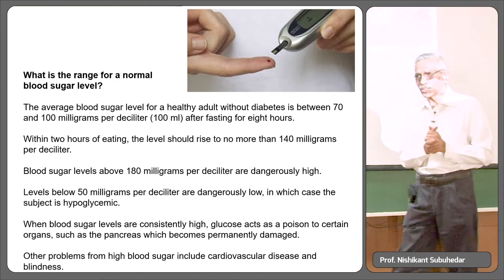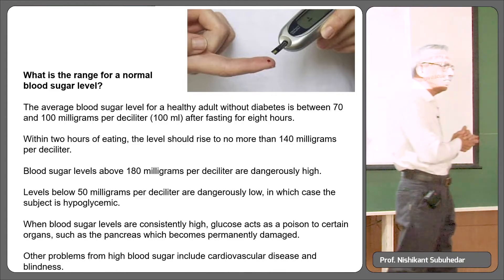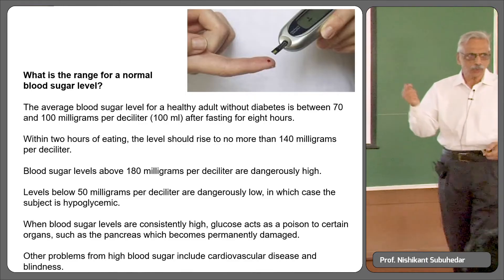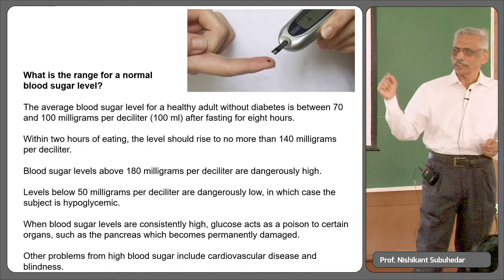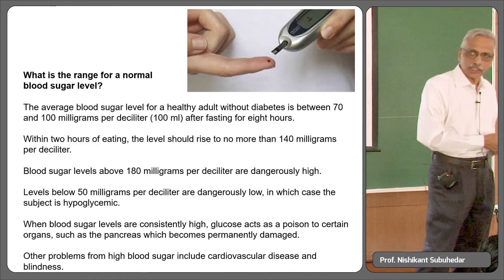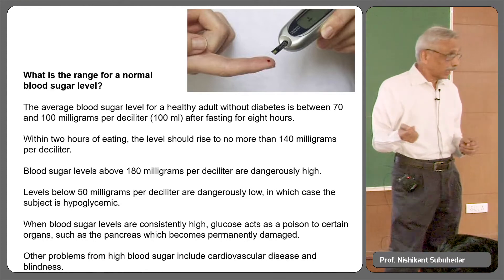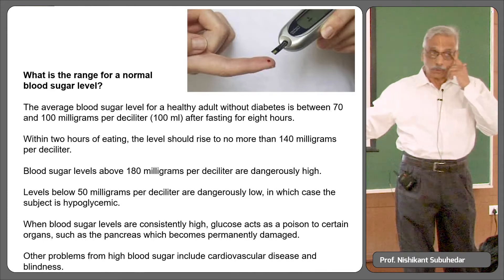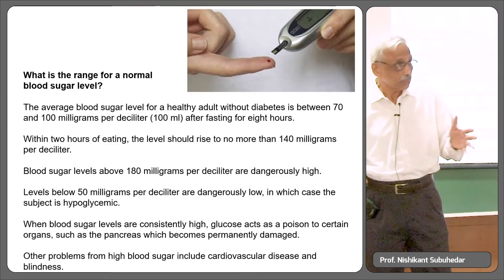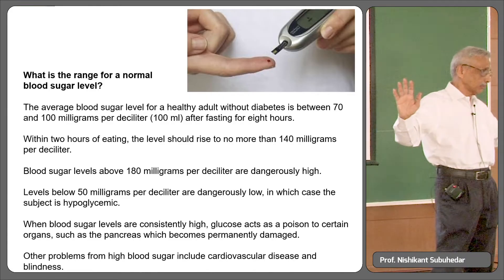Instead of going into the definition of homeostasis, let us directly dive into an example. I'm going to do a very simple experiment: I'll prick your finger, collect a tiny blood sample on an instrument called a glucometer, and evaluate your blood sugar level. Surprisingly, if you all had breakfast about an hour and a half ago, your blood sugar level will be about 90–105 milligrams per 100 ml.